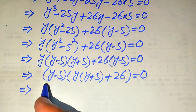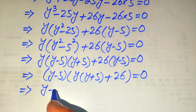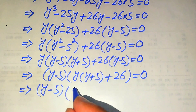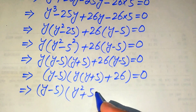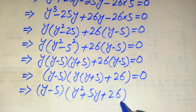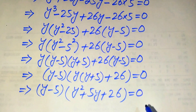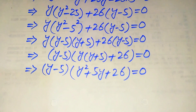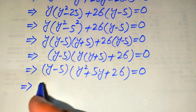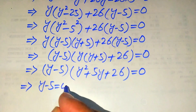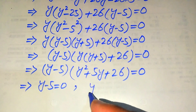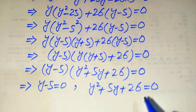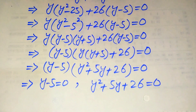This simplifies to (y − 5)(y² + 5y + 26) equals 0. We now divide into two cases: Case 1 is y − 5 equals 0, and Case 2 is y² + 5y + 26 equals 0.